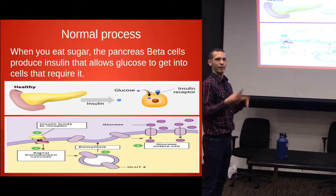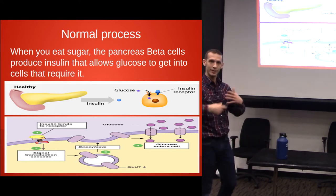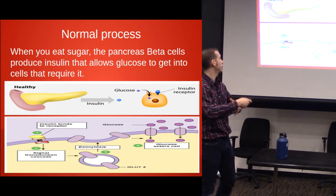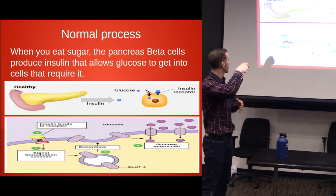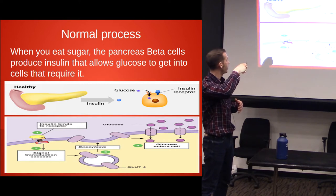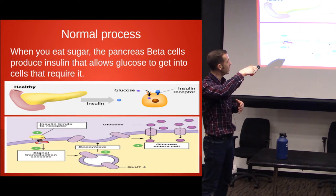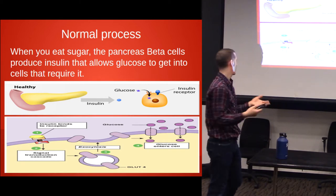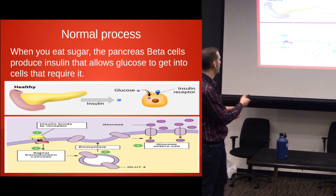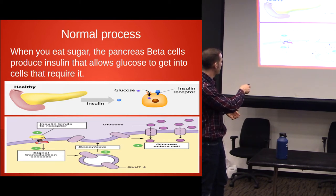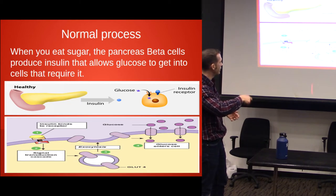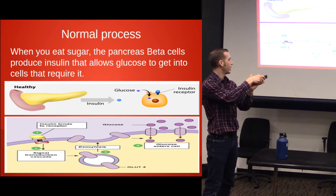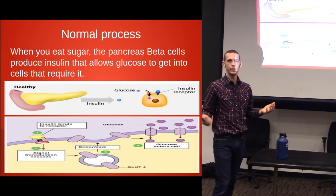Here's how it's supposed to go — the normal process. This is the pancreas. When you take in sugar, your body produces insulin from the pancreas, it binds to receptors, and the sugar is then able to enter into the cell. Insulin binds to the receptor site, and the cell signals something called GLUT4 — a membrane protein which allows sugar to get into the cell. That's how the process works.